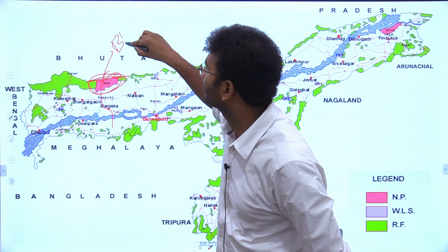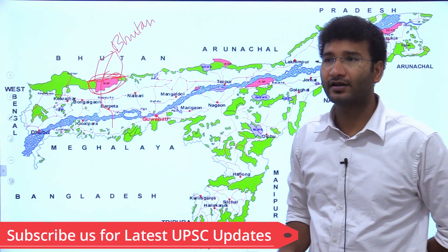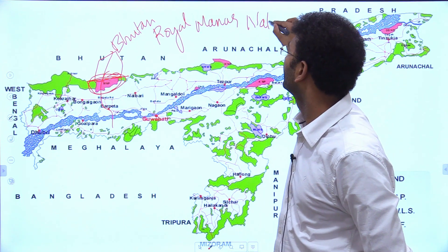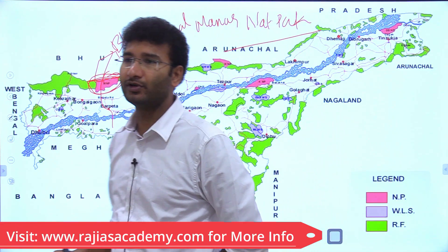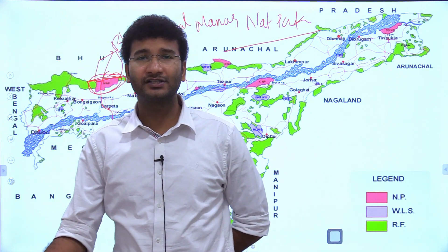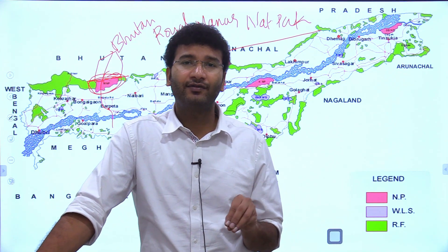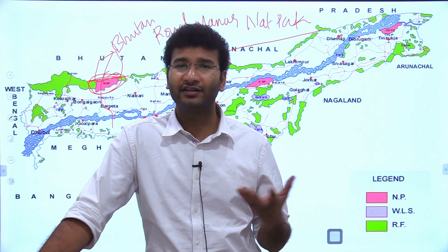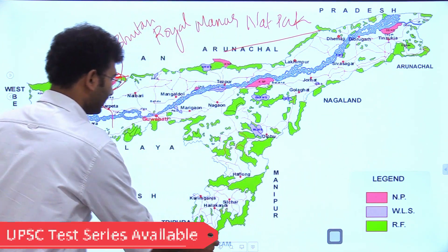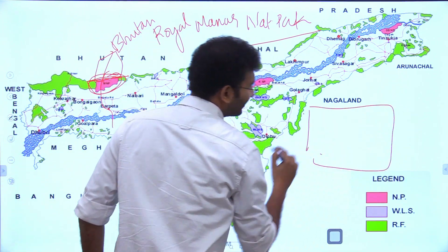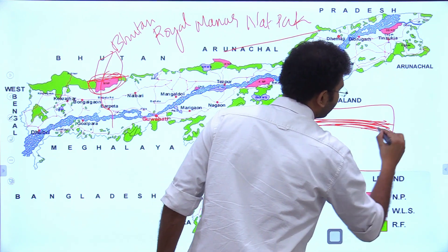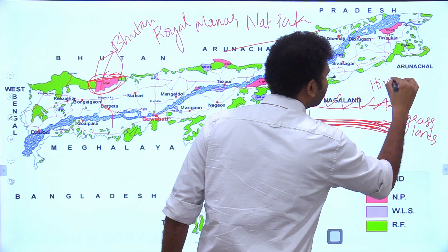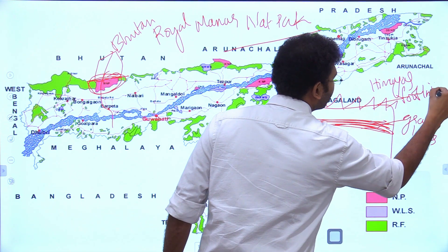In Bhutan, the corresponding park is called Royal Manas National Park. Manas is home to many critically endangered species. In the grasslands of Manas — which lie at the Himalayan foothills — you find the pygmy hog, the smallest pig in India, and the Bengal Florican, both critically endangered indicator species. Manas also has varied vegetation: grasslands, moist deciduous forest, and semi-evergreen forest, with the Manas river providing fertile alluvial soils.